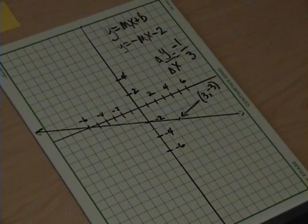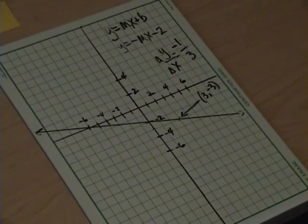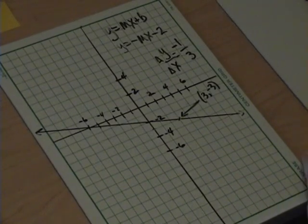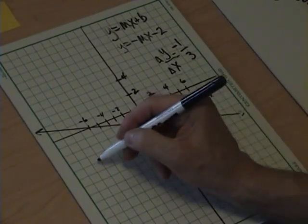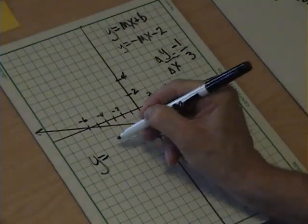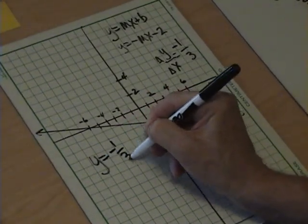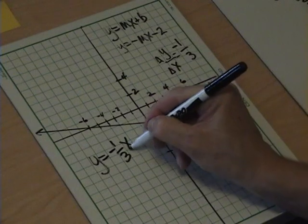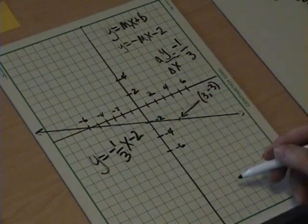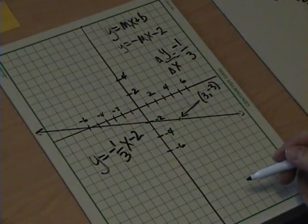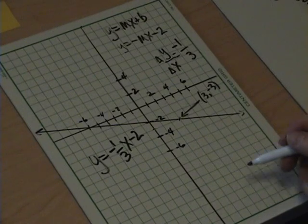So, that means, if we want to write our equation properly, we can do it on this board here. We're going to have y is equal to negative one third x minus two. And that should be the answer for our problem, right here.